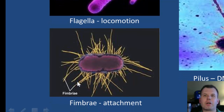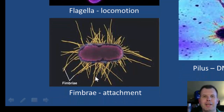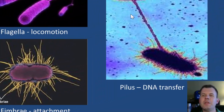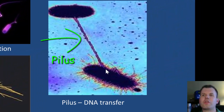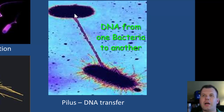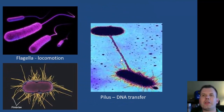Another structure bacteria have are called fimbriae. Fimbriae allow the bacteria to stick — they're hair-like structures, or what I like to call bacterial Velcro. When we go back to the idea of bacteria sticking to your teeth, a lot of times it's due to these fimbriae. The last structure, which not all bacteria have, is called the pilus. A pilus allows bacteria to exchange DNA — this is essentially bacterial sex, where one bacterium donates DNA to another through the pilus structure, much like a conduit between cells.